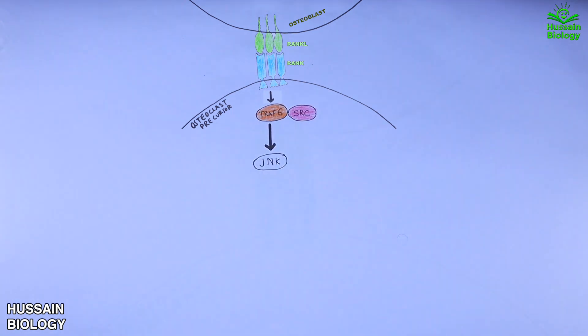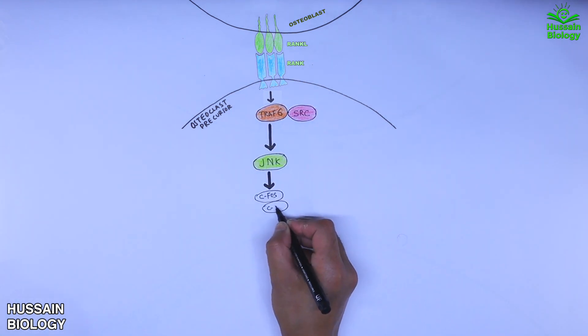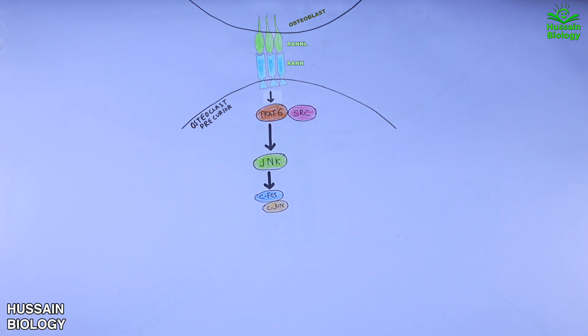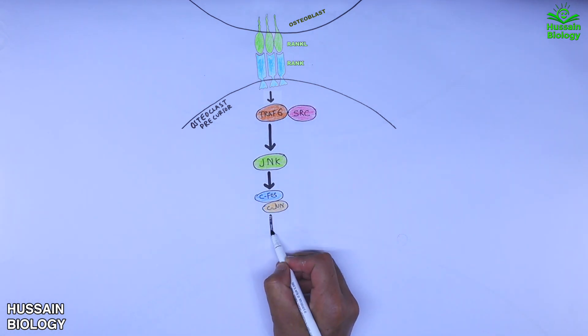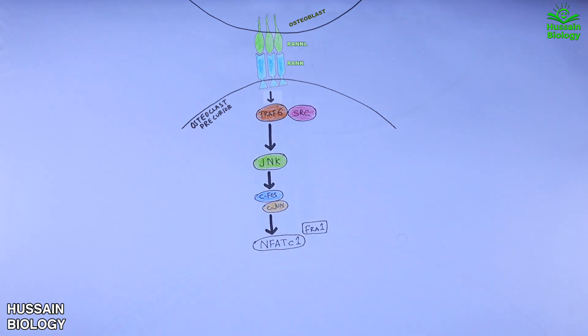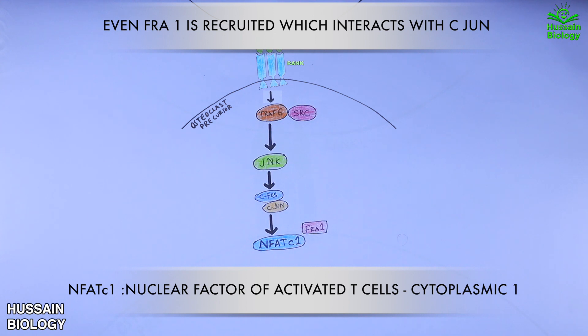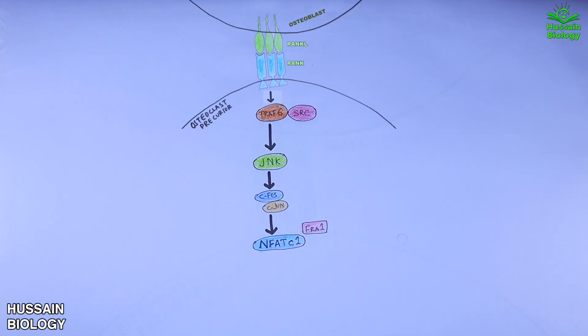Within the precursor cell, signaling is mediated first by TRAF6 and SRC, which are recruited and mediate downstream signaling. TRAF6 activates JNK, which in turn activates cFos and cJun, and ultimately these activate the NFATc1 protein.